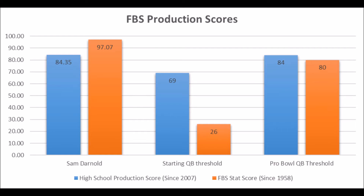So let's start with Sam Darnold. When you look at his high school production score, he had an 84.35 out of 100, which pretty much hits every single threshold when it comes to long-term starting potential and Pro Bowl potential. Every single multiple Pro Bowl quarterback since the 2007 NFL Draft class had at least an 84 or higher score — guys like Russell Wilson, Cam Newton, Andrew Luck, and Matt Ryan.